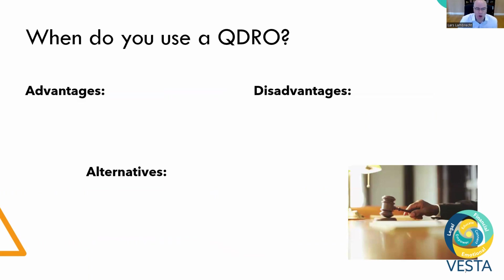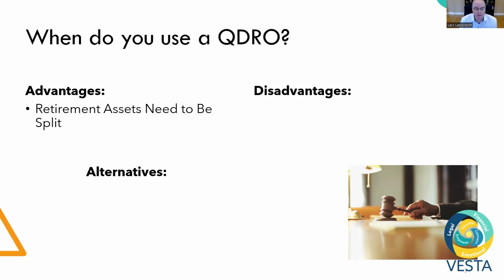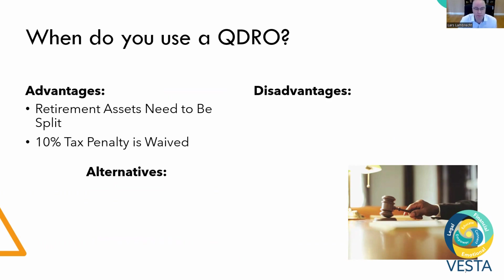So when do you use a QDRO? There are some advantages and disadvantages to consider. The main advantage is that a QDRO facilitates the splitting of retirement assets. Normally, retirement assets cannot be split without having to pay taxes on that distribution, so a QDRO lets you do that without taxes. In addition, as mentioned, the 10% penalty is waived when money is pulled out of the QDRO.